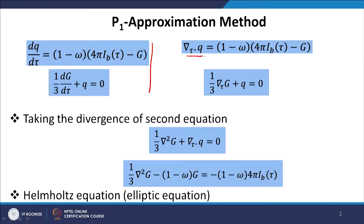Similarly, the second equation becomes (1/3) ∇G + q = 0. Here G is a scalar, so we take the gradient of G. The coordinates are non-dimensional optical coordinates. So q is a vector, and when we take ∇·q we get a scalar. When we take the gradient of G, it becomes a vector. Therefore, the first equation is a scalar equation and the second equation is a vector equation.